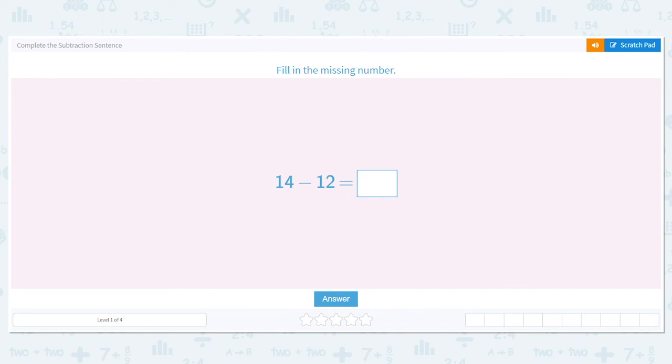All right, listen, we can handle this. If I have 14 and I take away 12, what do I have left? Well, how far away is 12 from 14? Count up: 12, 13, 14. It's two away.